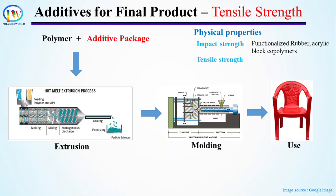The second property is tensile strength, or internal strength of the material. When sitting on a chair, a constant load is applied, and in the absence of sufficient strength, the chair will break after some time. Therefore, reinforcing fillers are added to achieve desired strength. Since strength requirements for household items like chairs are less than those for composites used in cars or aeroplanes, reinforcing agents differ accordingly. When high strength is required, glass fiber, carbon fiber, or Kevlar fibers are used. For moderate strength, talc, clay, and mica are used as reinforcing fillers as well as cost-saving fillers.